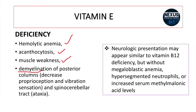A tip: the neurological presentation of vitamin E deficiency may appear similar to vitamin B12 deficiency. However, in vitamin E deficiency there will not be megaloblastic anemia, hypersegmented neutrophils, or increased serum methylmalonic acid levels. A patient with vitamin B12 deficiency will present with neurological symptoms but will also have megaloblastic anemia, hypersegmented neutrophils, and increased serum methylmalonic acid.